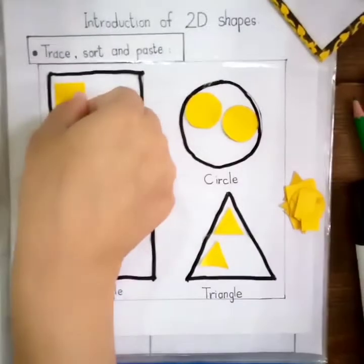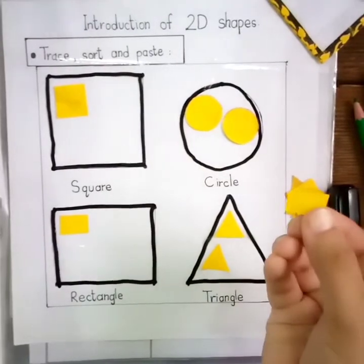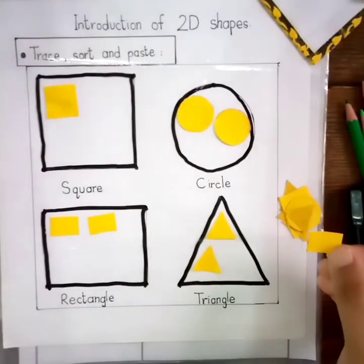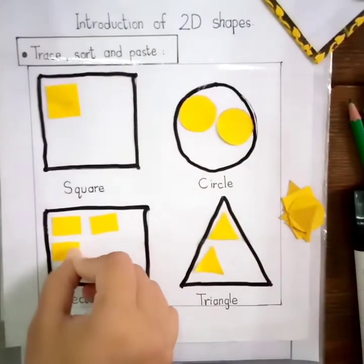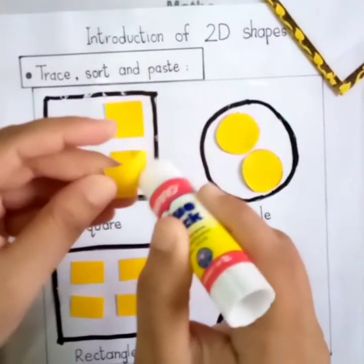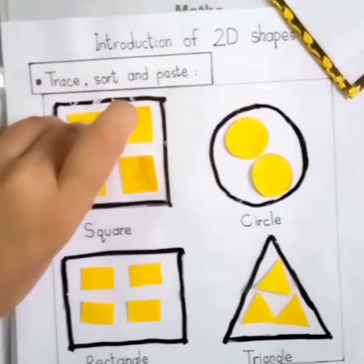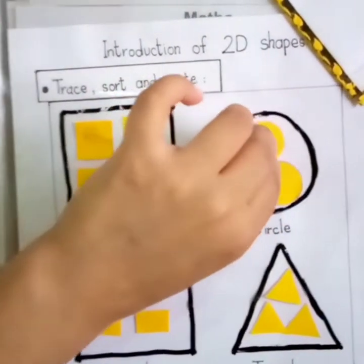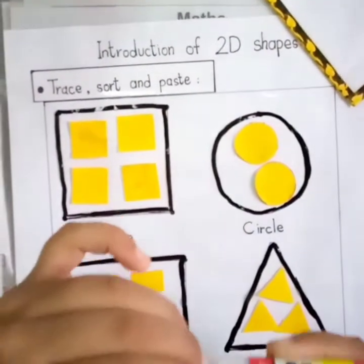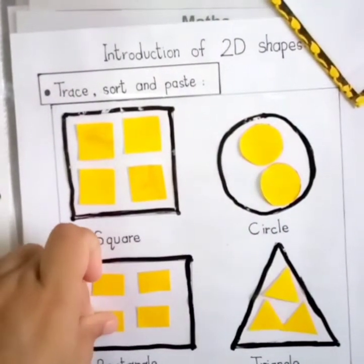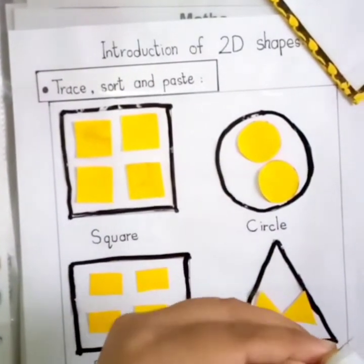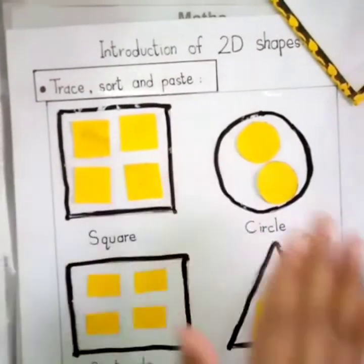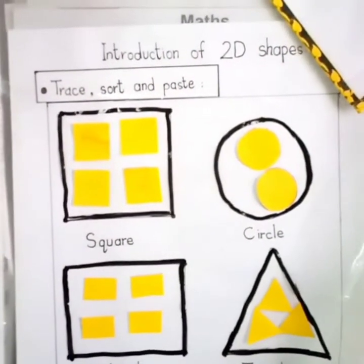Okay. Which shape is this? Rectangle. Which shape is this? Again rectangle. So I will put it in the rectangle. Now apply a little glue and paste. Square. Circle. Now rectangle — I will put it in the rectangle. After all pasting, we are going to move to another worksheet.